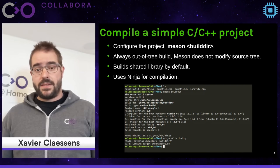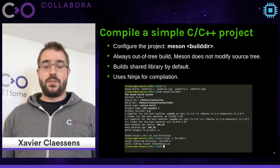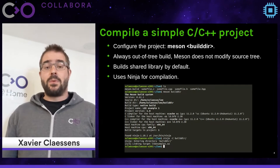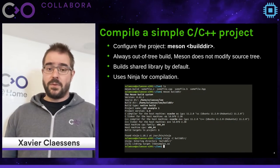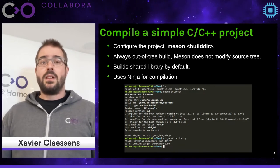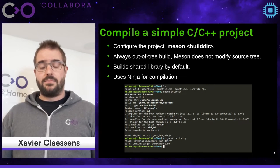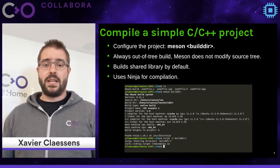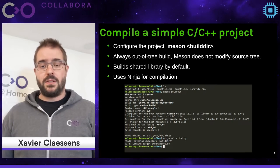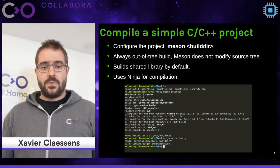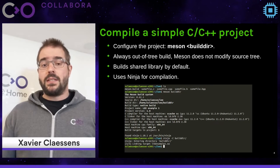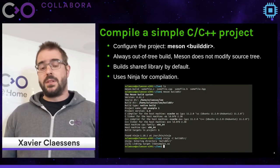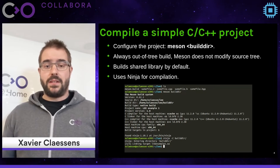The good news about Meson's dependencies is we only have one: Python. We depend on Python 3.6 up until Meson 0.61, and starting from 0.62 we bumped the requirement to Python 3.7. Most Linux distributions and platforms already have Python 3.7 available, and we only depend on the standard library, so there are no external modules you need to install using pip or anything like that.